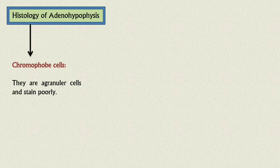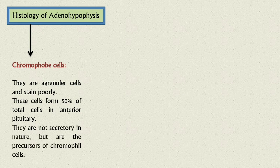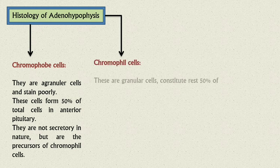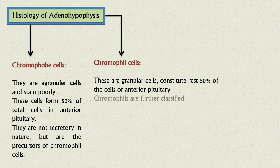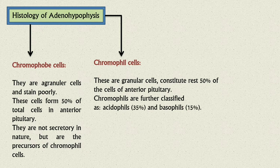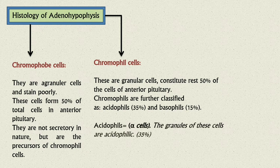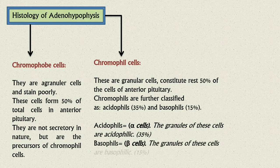The anterior pituitary consists of mainly two types of cells. First are the chromophobe cells — these are agranular cells that stain poorly, form 50 percent of total cells in the anterior pituitary, and are not secretory in nature but are precursors of chromophil cells. The next type is the chromophil cells — these are granular cells and constitute the remaining 50 percent. Chromophil cells are further classified as acidophils, constituting about 35 percent, and basophils, constituting 15 percent. In acidophils the granules are acidophilic, and in basophils the granules are basophilic.